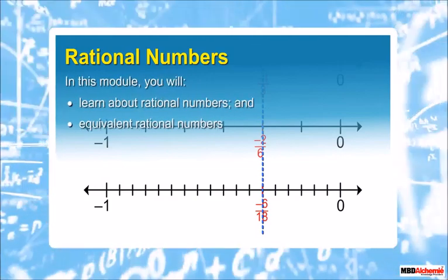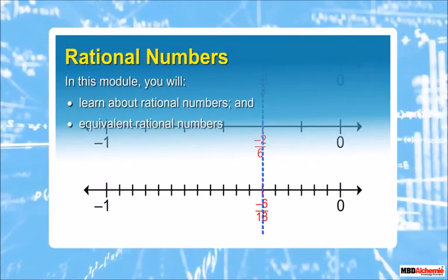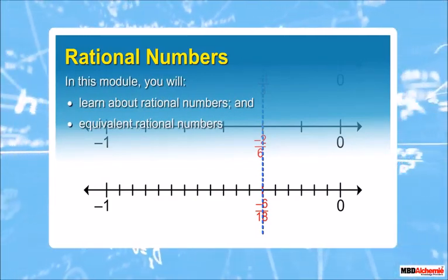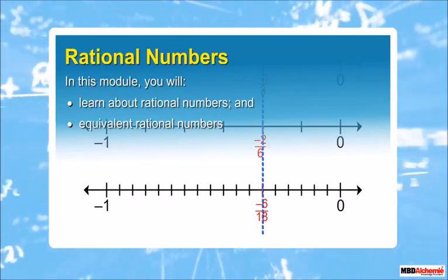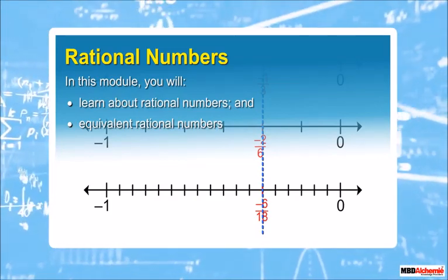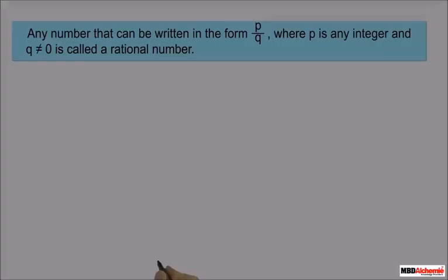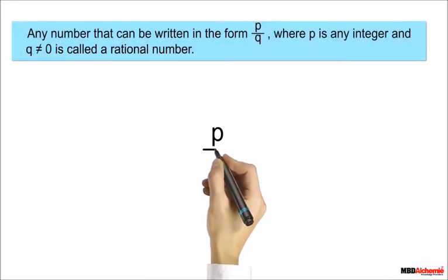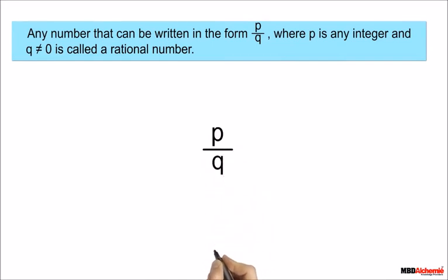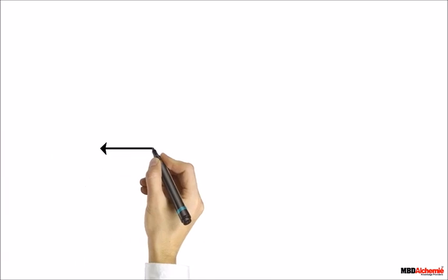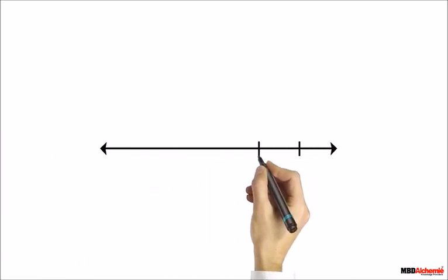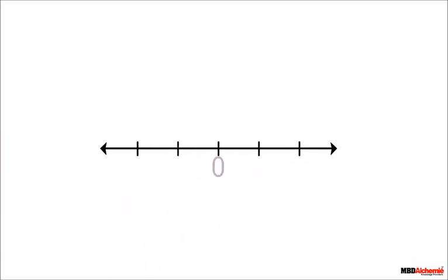Rational numbers. In this module you will learn about rational numbers and equivalent rational numbers. We know that any number that can be written in the form P upon Q, where P is any integer and Q is not equal to zero, is called a rational number. Now we will learn how to represent rational numbers on a number line.